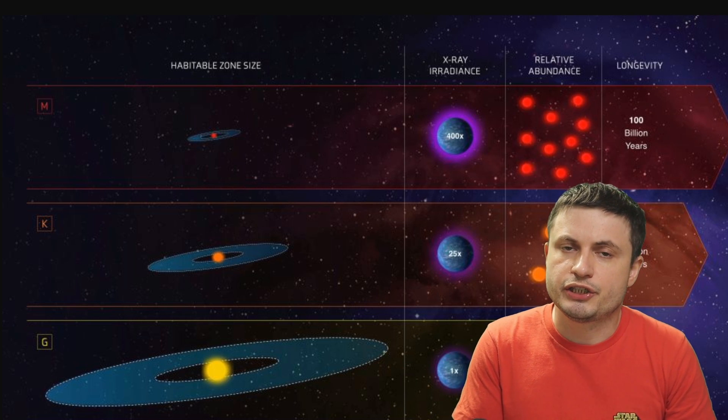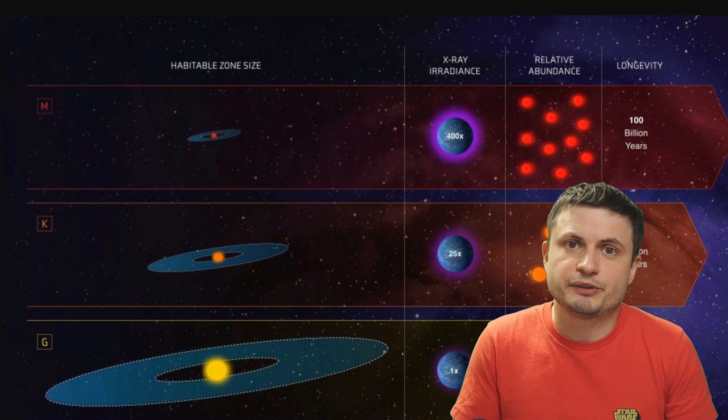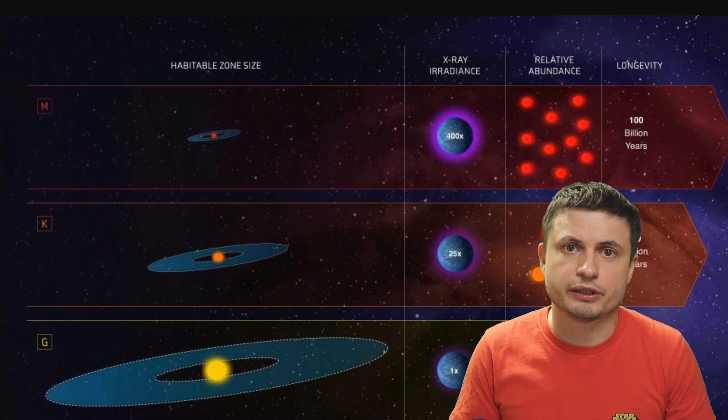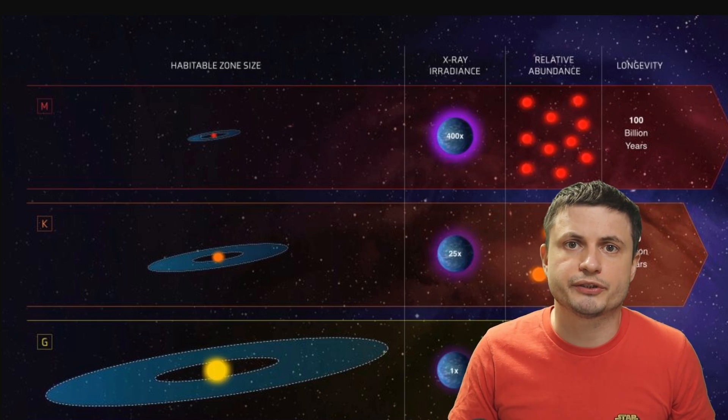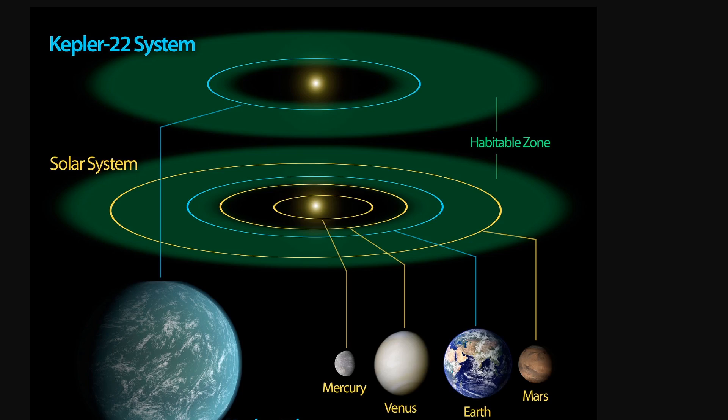And another major statistical implication here is that it seems that many F, K and G type stars, or in other words, stars similar to our Sun, at least from the stars that Gaia telescope and Kepler telescope looked at, seem to possess at least one Earth-sized planet within the region we would call habitable zone.